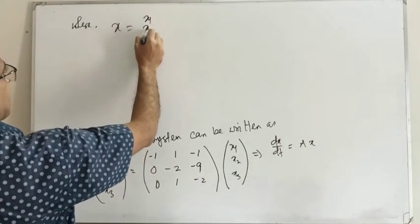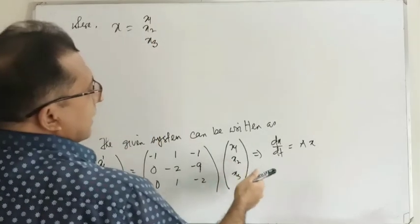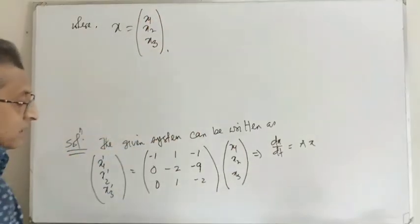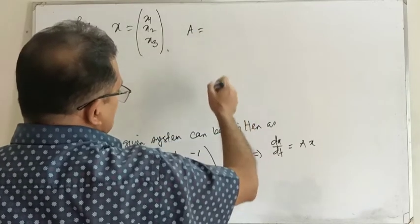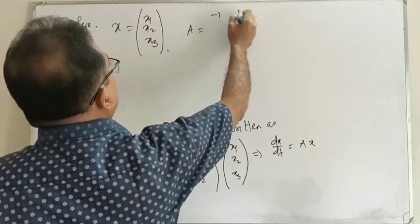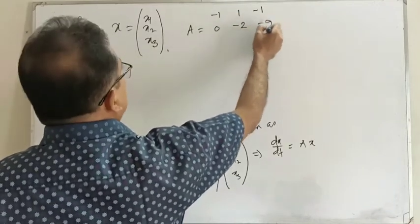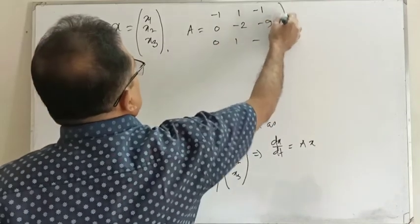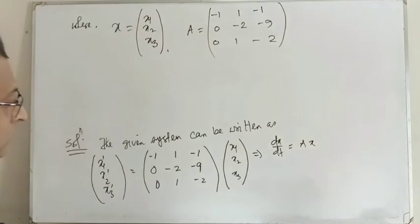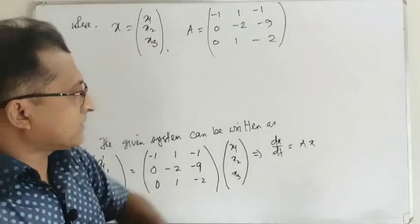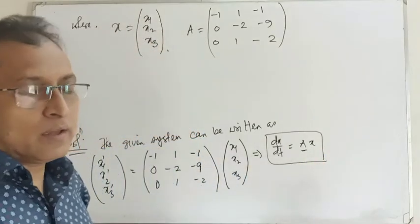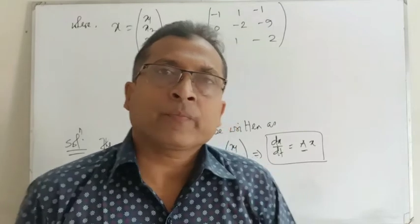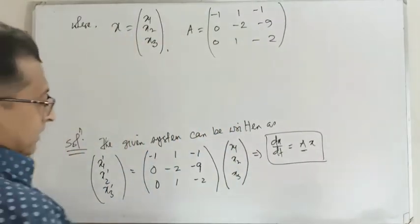So x1, x2, x3. A is a 3 by 3 square matrix: minus 1, 1, minus 1, 0, minus 2, minus 9, 0, 1, minus 2. The whole system can be written as dx/dt equal to Ax. Let x(t) equals to e to the power lambda t times u be a solution, where u is an eigenvector.